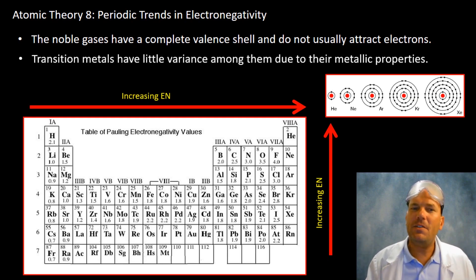Transition metals, on the other hand, exhibit little variance among them. This is due to the complex metallic bonding properties, electron-electron repulsion, electron shielding, and some of the other phenomena that occur within the D block.